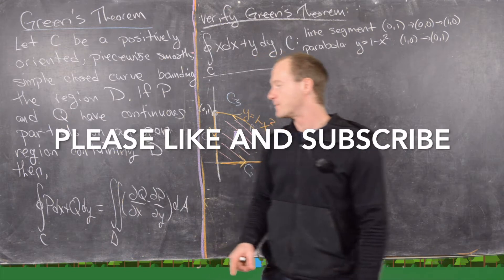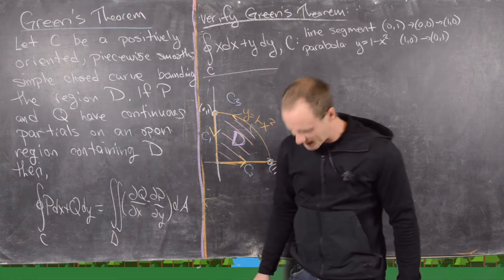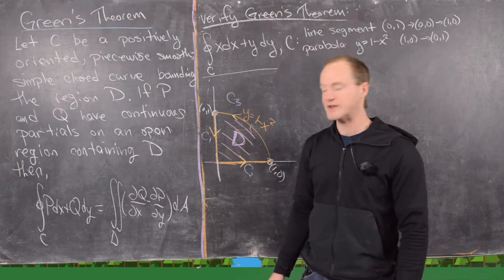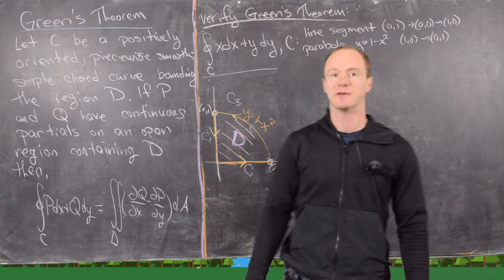so notice that's really a line integral over the vector field P comma Q, and then on the right hand side is a double integral over the region D of partial Q partial X minus partial P partial Y.